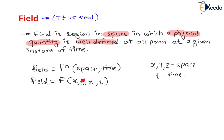If the field is space independent, then it depends only on time. If it is time independent, then it depends only on space. Sometimes the field may depend on both space as well as time. Therefore, generally in vector form, space is represented by r-bar, and the field is expressed as a function of vector r and time t.